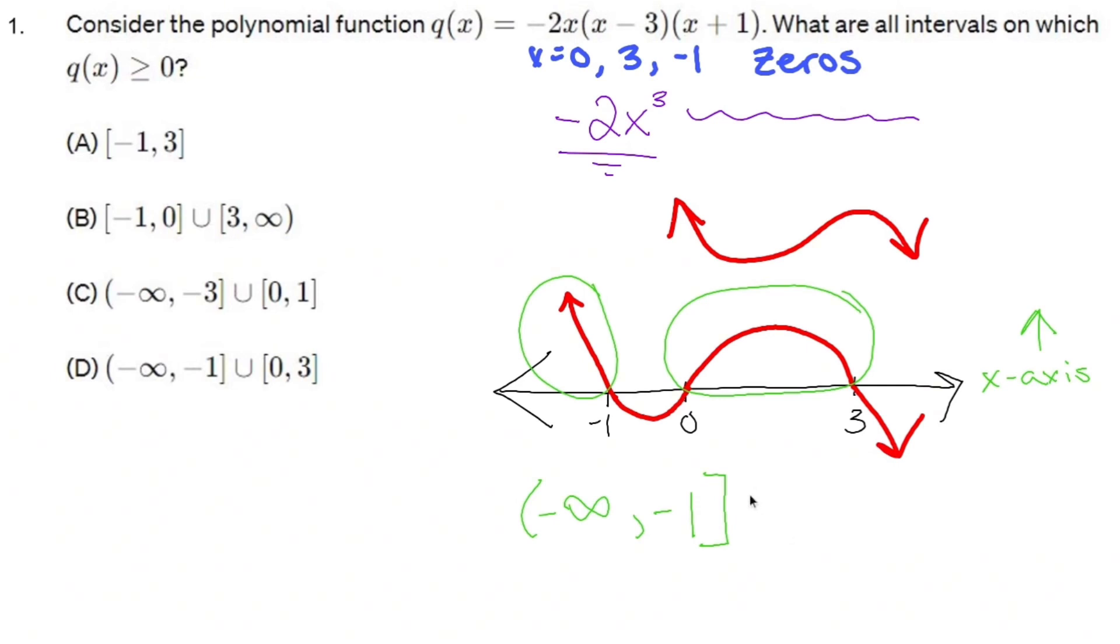Instead of a parenthesis, I say union, and then it's negative, then it hits zero at zero. So at zero and including zero, it's going to be zero, and now it's positive, and then once I make it to three, it's zero again, so I include it.